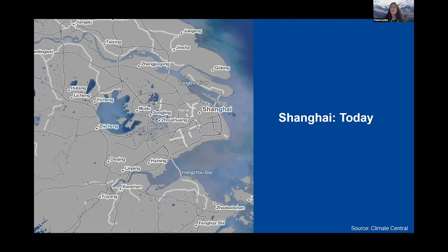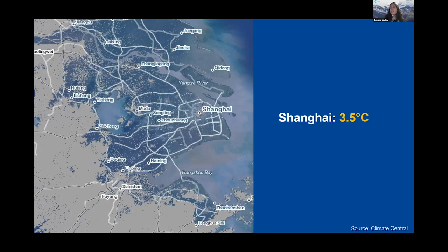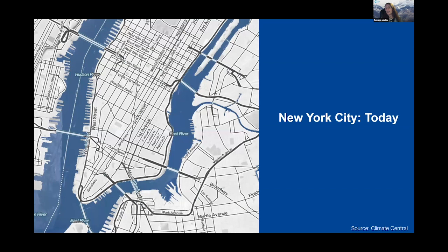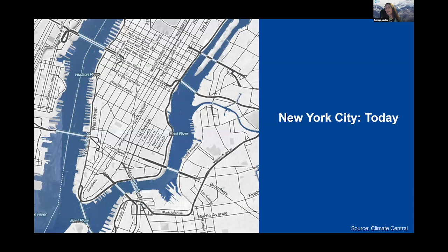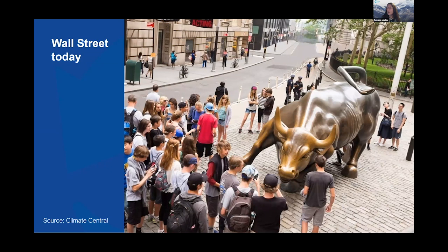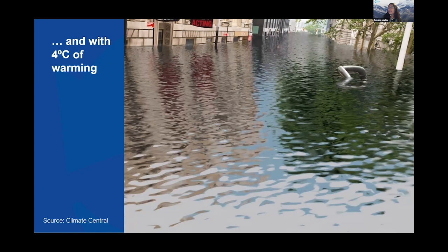Let's look at what this means for particular locations. This is a map of Shanghai today, with the ocean out here. With three degrees C warming, you can see the devastating effect of sea level rise, putting most of the city completely underwater. This is New York City today, and with about 3.5 degrees C increase, all of these areas will be underwater — including this area here, which is where Wall Street is. With four degrees of warming, sea level rise will completely put Wall Street underwater.